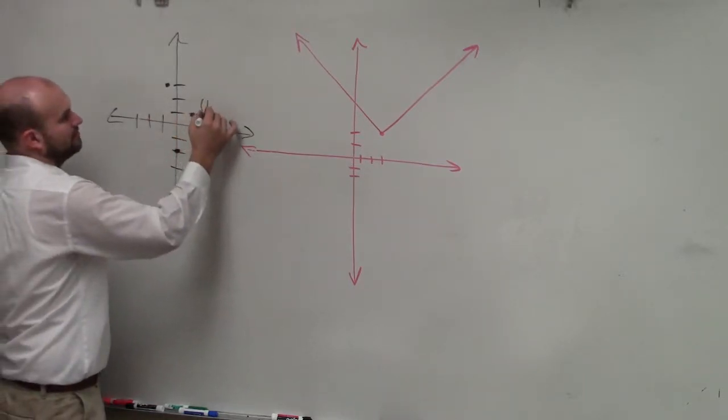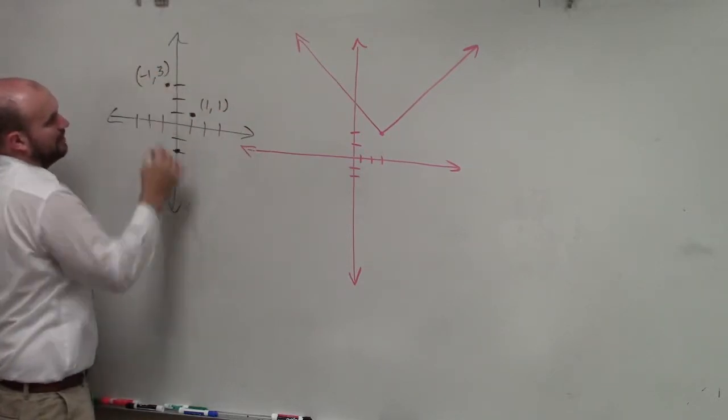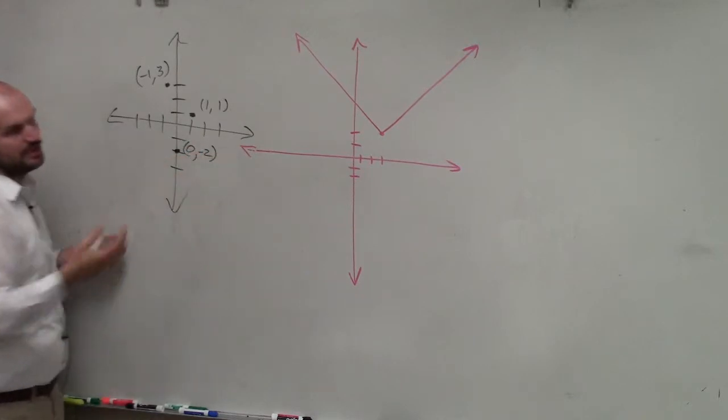Now, these coordinate points, this is 1, this one is negative 1, 3, and this point is 0, negative 2. You guys agree with me?